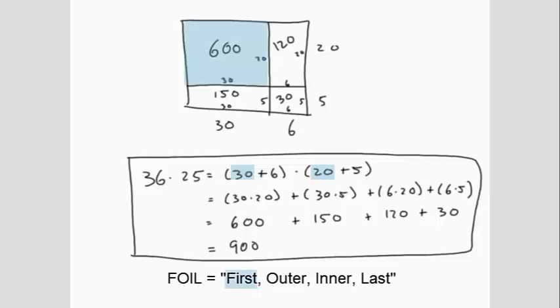First means the first of each pair. Outer means the outermost two values. Inner means the inner two values. And last means the last of each pair. We will work through a few more examples of this to reinforce the idea.